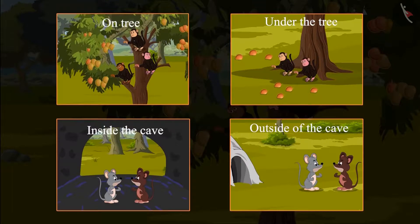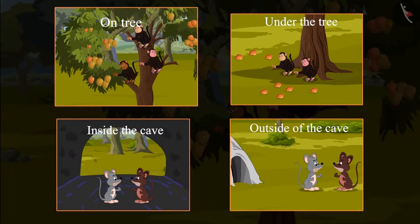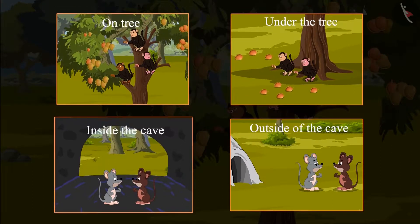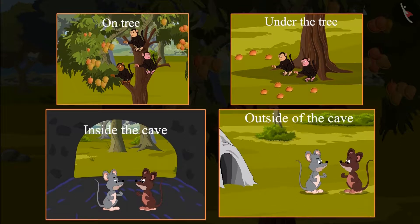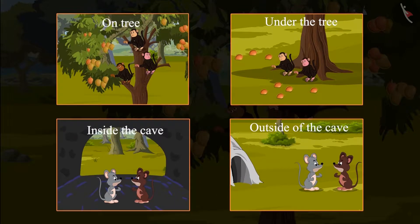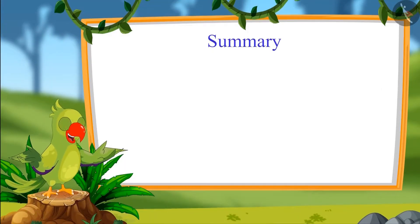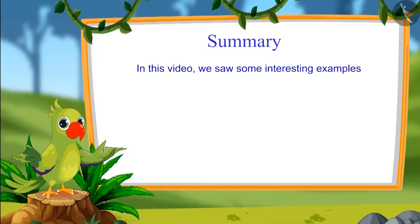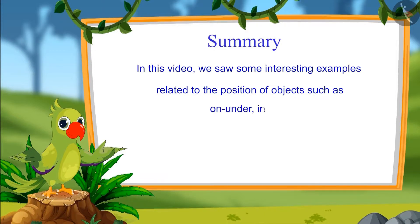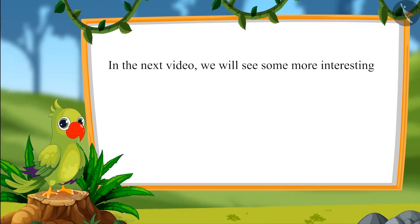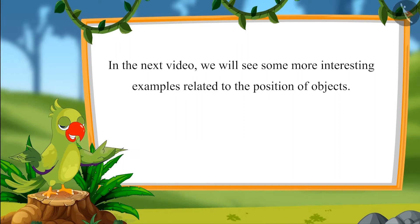So children, we saw that a few things were on the tree and a few were under the tree, a few were inside, and a few were outside. These are called positions of objects. In this video we saw some interesting examples related to the position of objects such as on, under, inside, and outside. In the next video we will see some more interesting examples related to the position of objects.